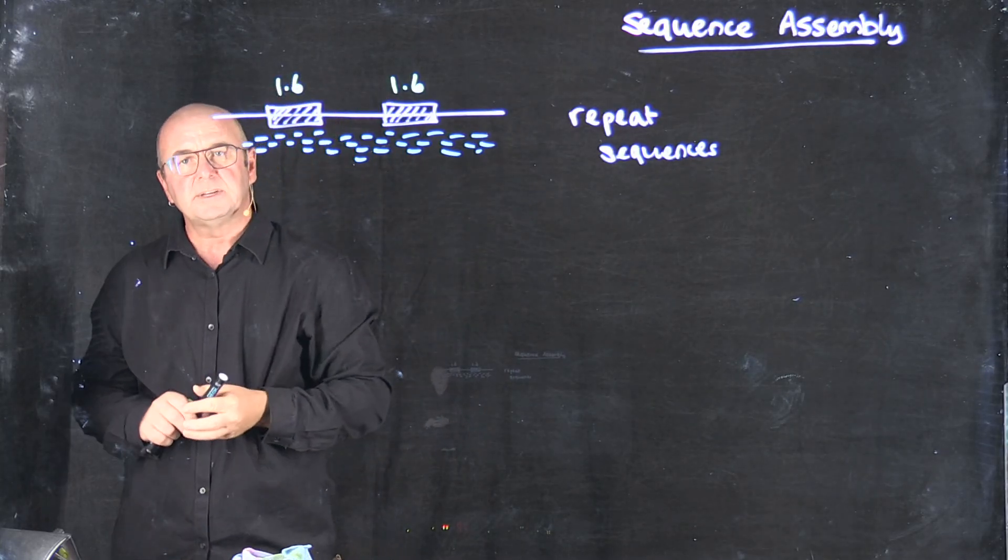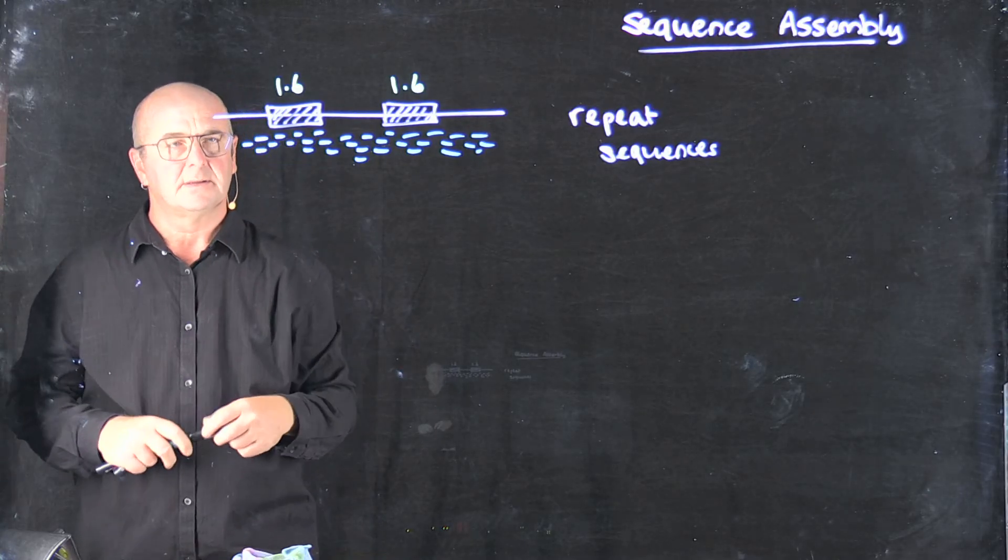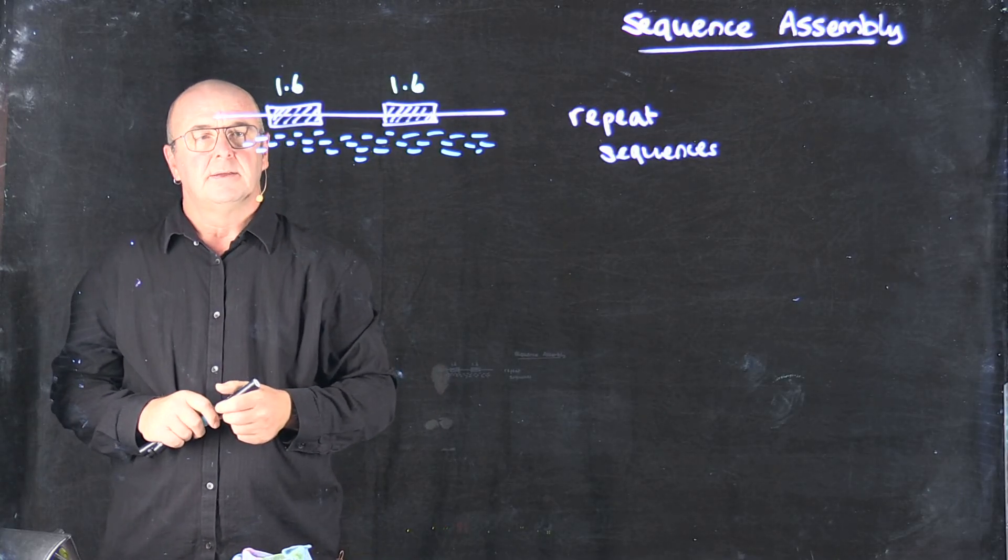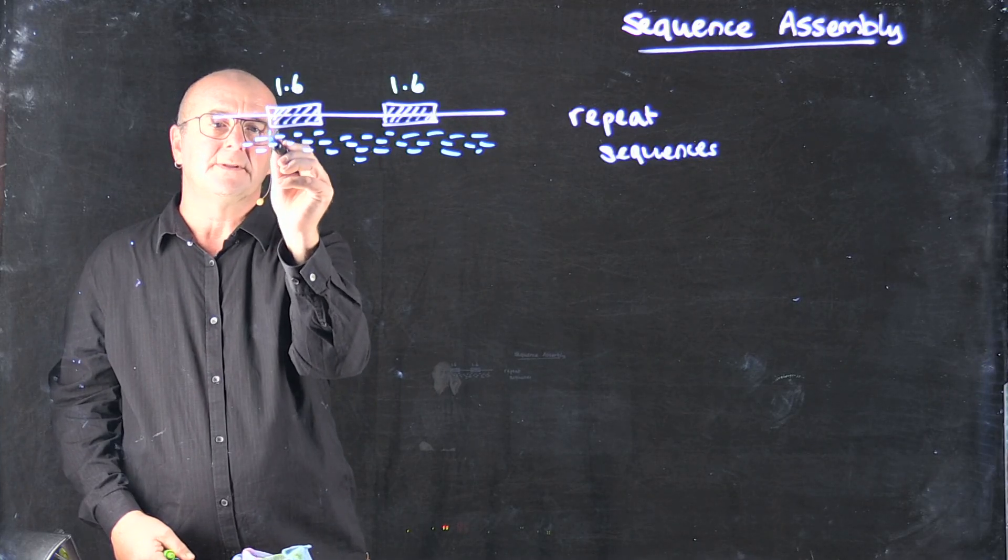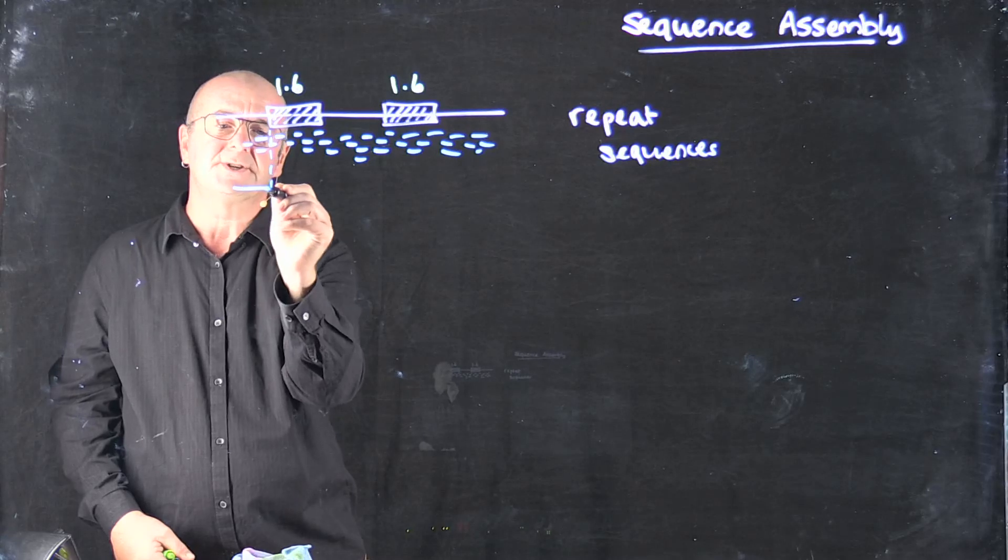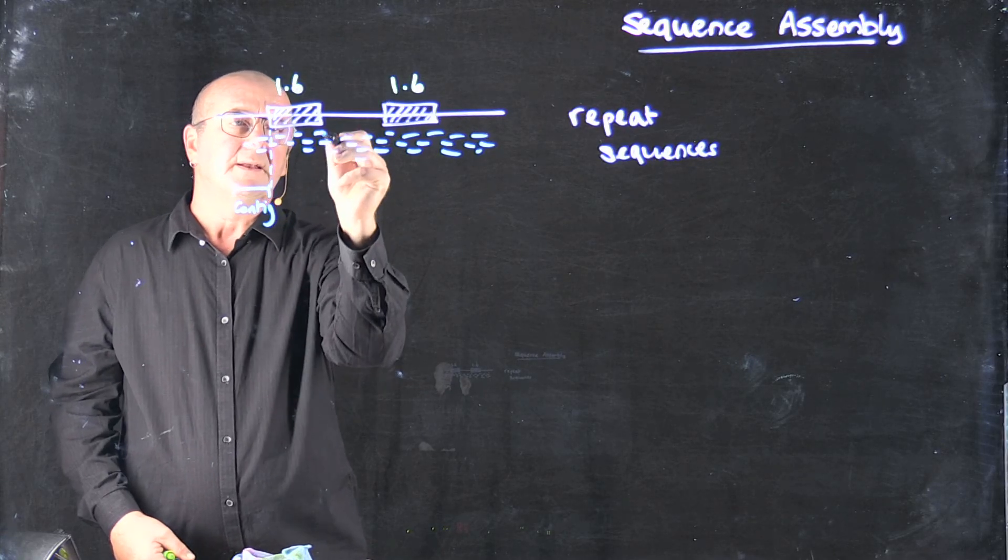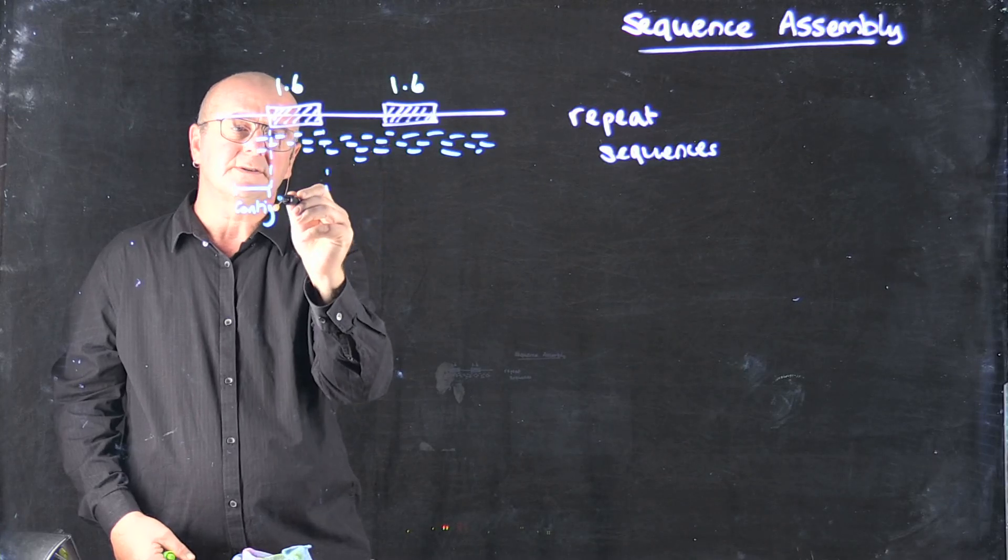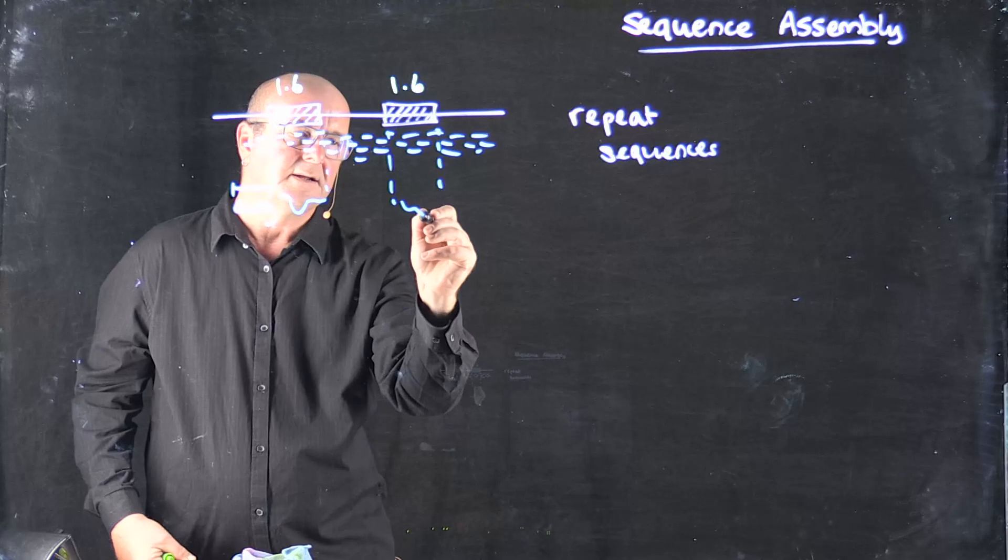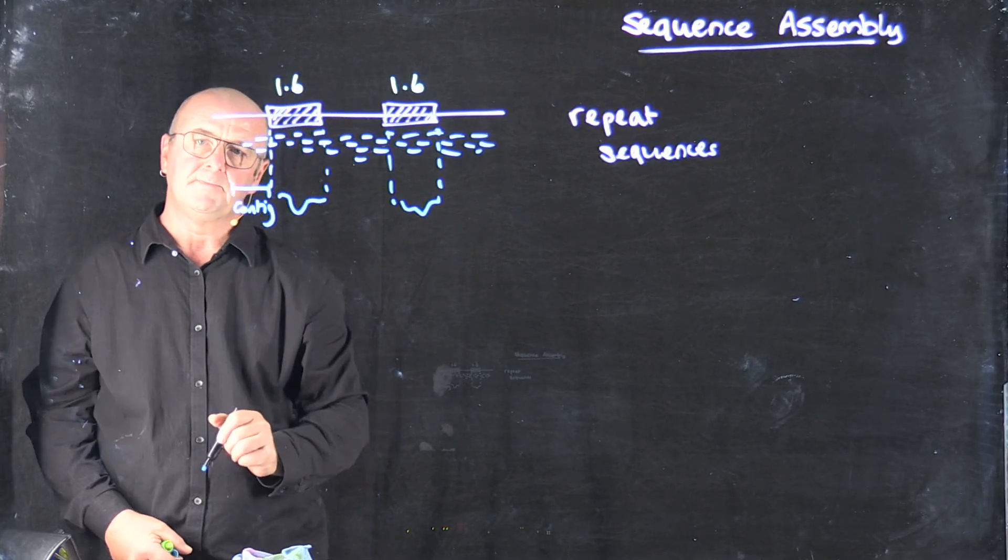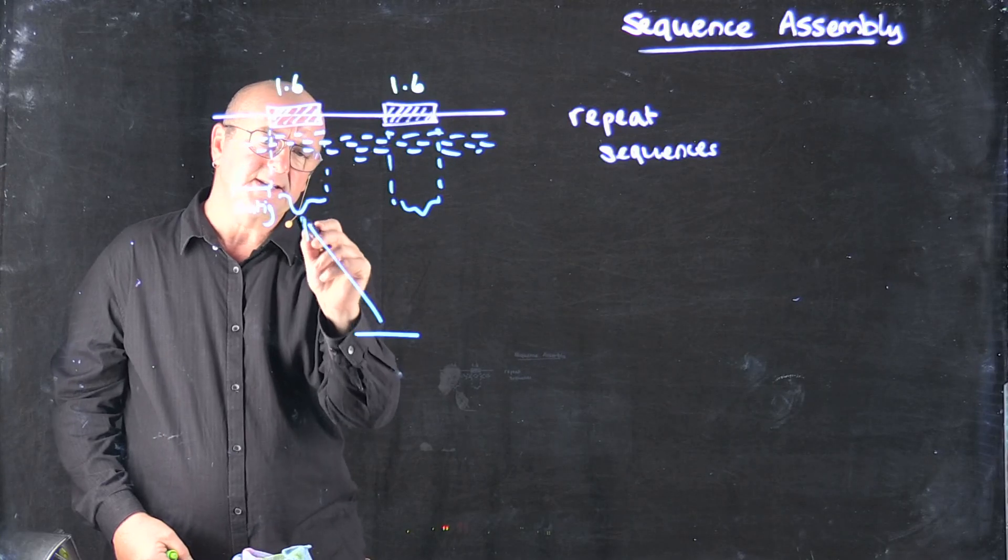And so as we do the sequencing, when we try and do the assembly, we can assemble the reads up to this region and we get a contig. Now because all the reads here and all the reads here are identical, we'll actually only get one contig that represents both of those.